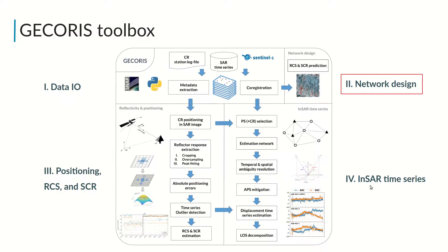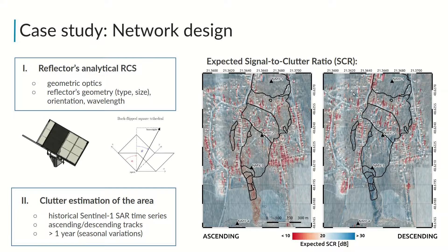GECORIS contains three primary modules. The first module is for network design. One can compute the expected radar cross-section of the reflector given its geometry, and estimate the clutter level of a particular site before the reflector installation using historical SAR data to obtain maps of the simulated signal-to-clutter ratio for optimizing the reflector placement.